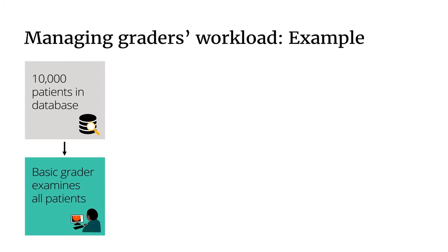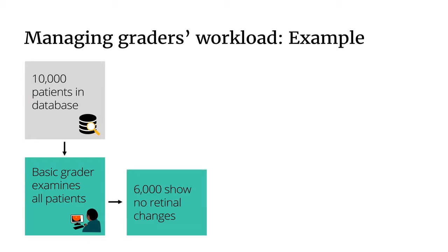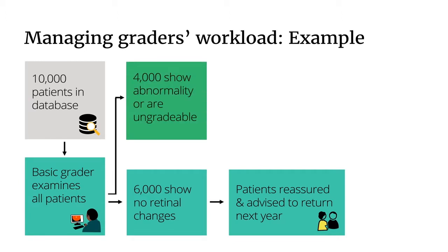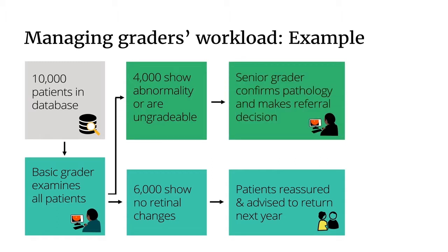Of these, 60% are likely to have no visible retinal changes — that is, 6,000 patients' image sets show no pathology. These patients are reassured and advised to come back the following year. The remaining 4,000 patients have image sets which show some abnormality, either pathology or being ungradable, and these are sent to the senior grader.